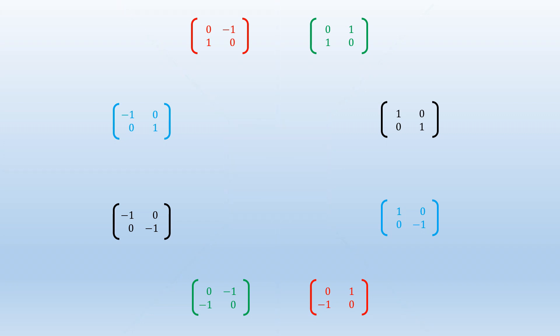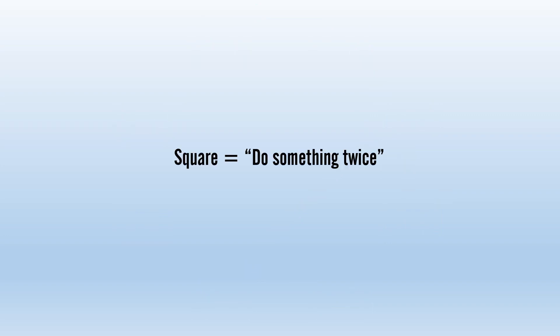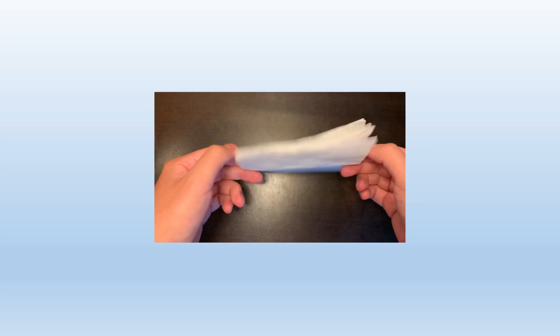I want you to see what happens when we square all of these matrices. For all the reflection matrices, you end up back at the identity matrix when you multiply it with itself. This should make sense. In matrix multiplication, you could interpret that squaring as doing a transformation twice. And if you take a square and reflect it twice, you're going to end up in your original position.